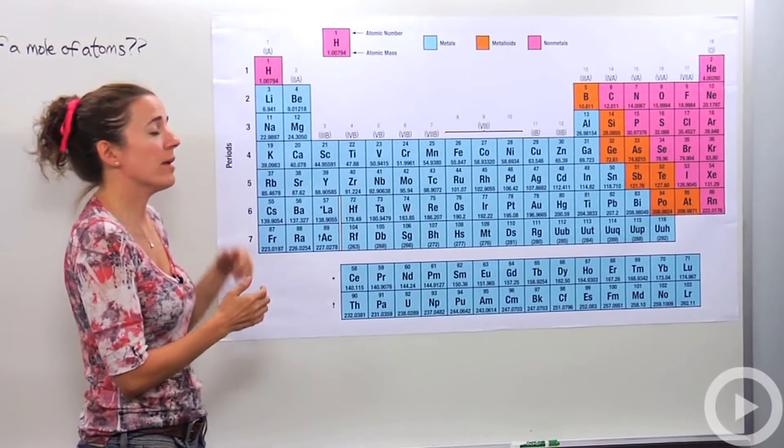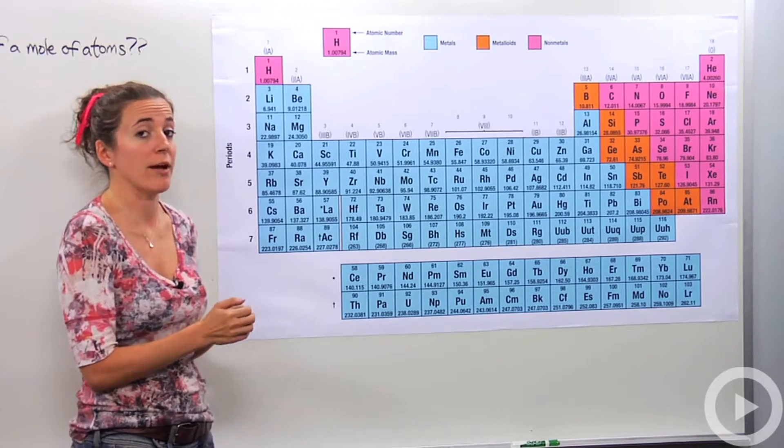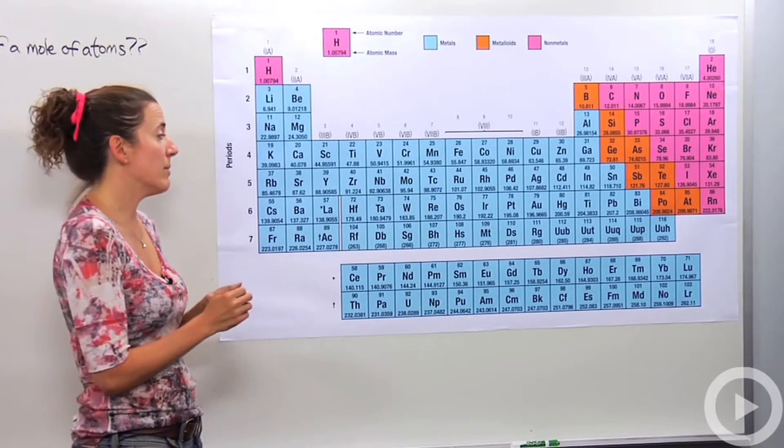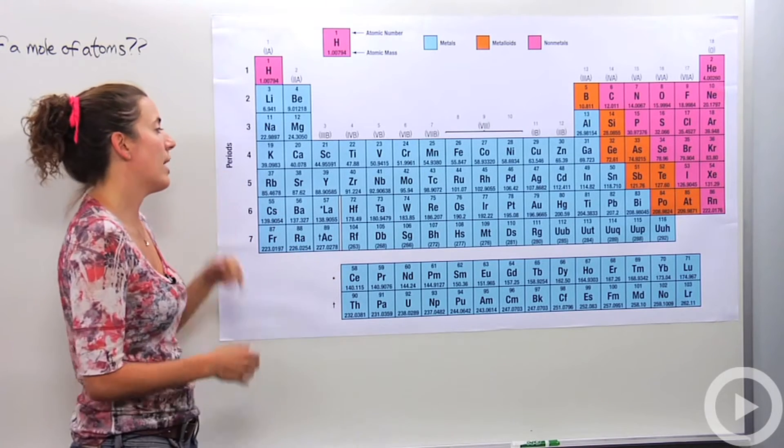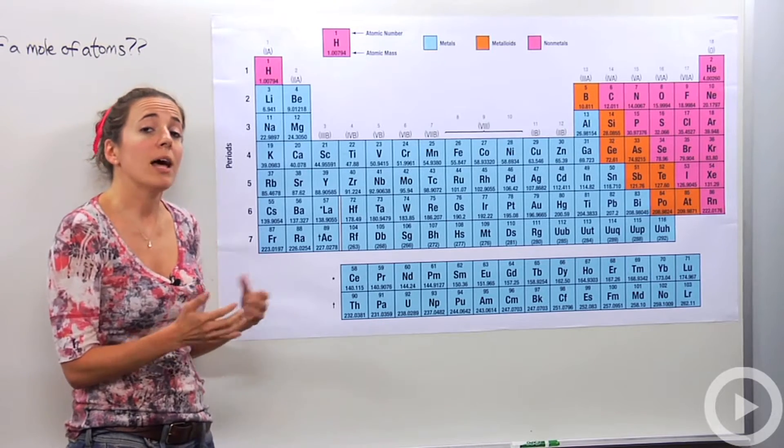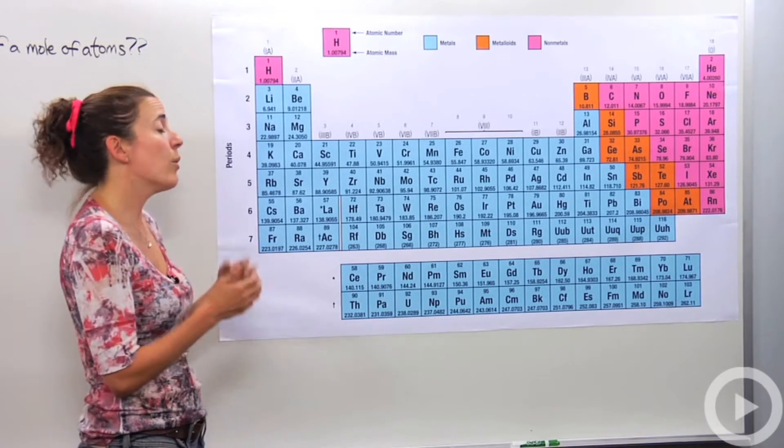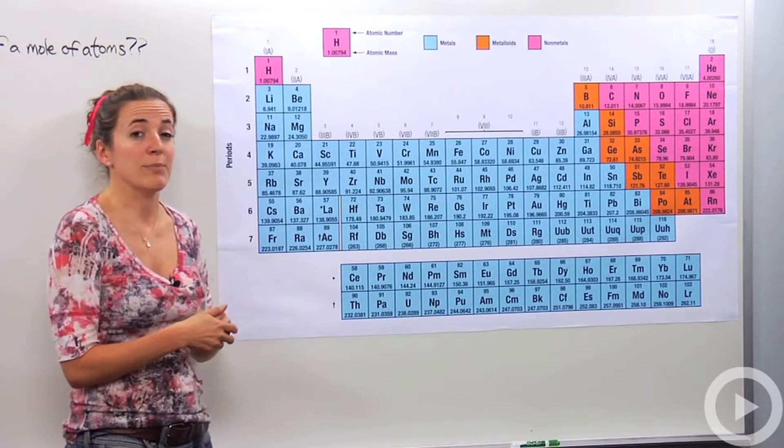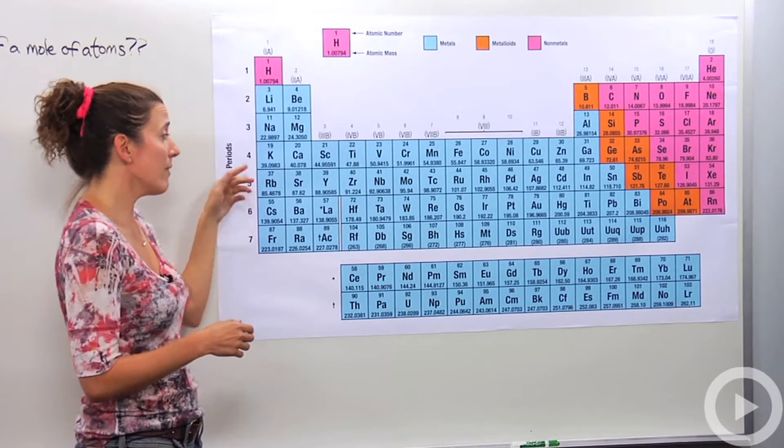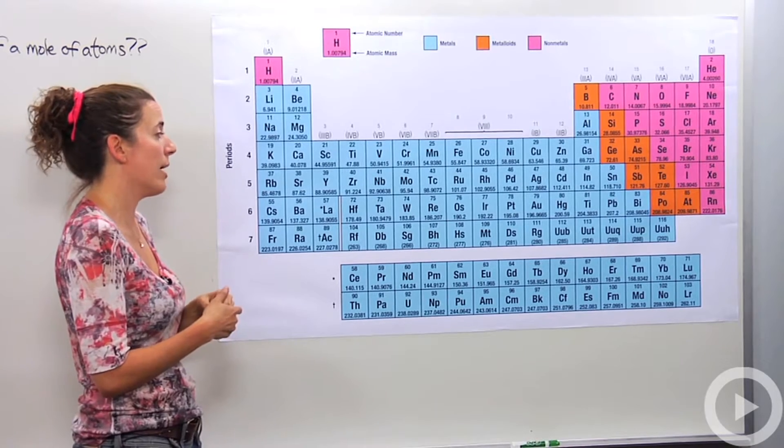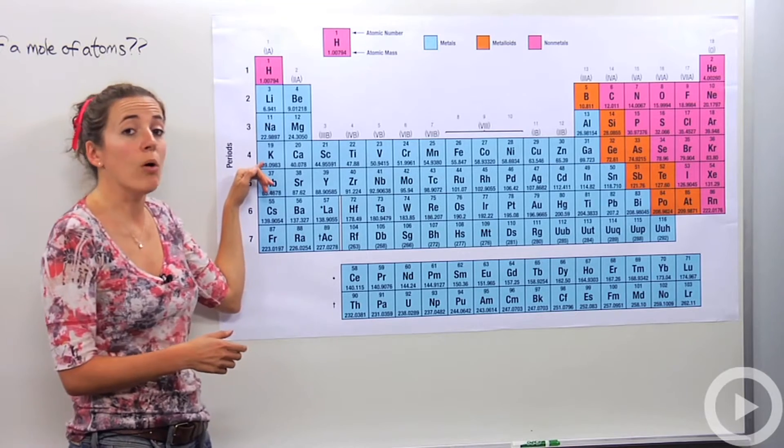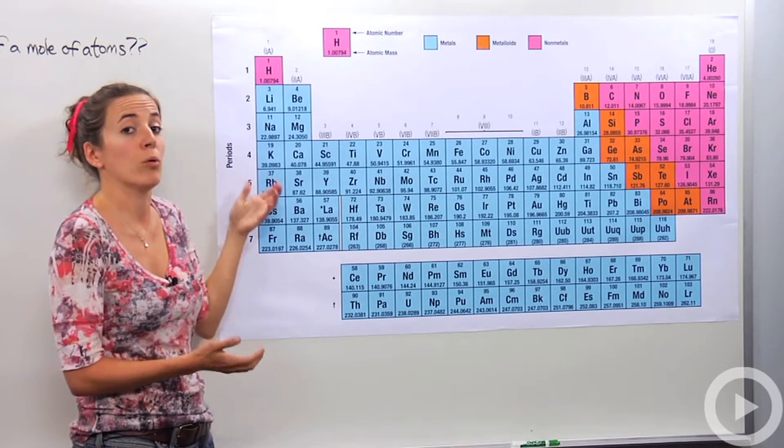So let's look over the periodic table. And we know these numbers underneath here represent the atomic mass of that particular atom. For example, if I'm talking about potassium, I know the average mass of potassium atom is 39.0983 atomic mass units. But Avogadro actually discovered that if he had a mole of that atom, meaning 6.02 times 10 to the 23rd particles of potassium, they actually weigh 39.0983 grams.